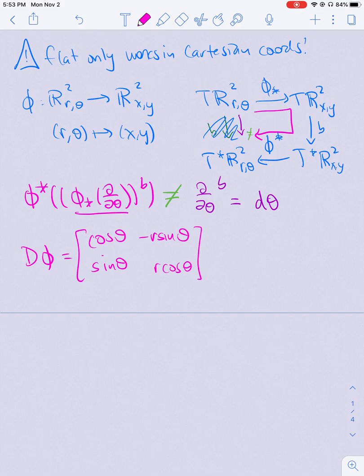So then if I want to just compute this part, then the push forward of ∂/∂θ is just the second column, it's going to be -r sin θ, r cos θ.